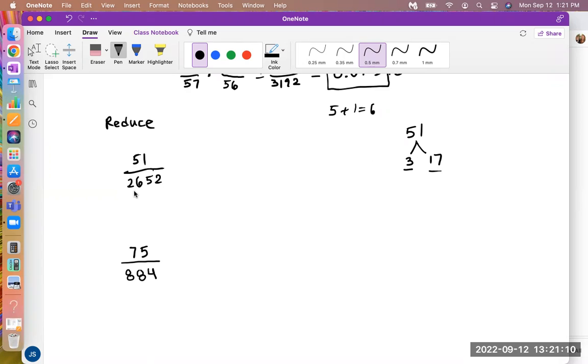Does 3 go into 2652? So we just take a calculator, 2652 and divide by 3, and it does. It goes in equally, and the answer is 884. So this is something else that I recommend to you.